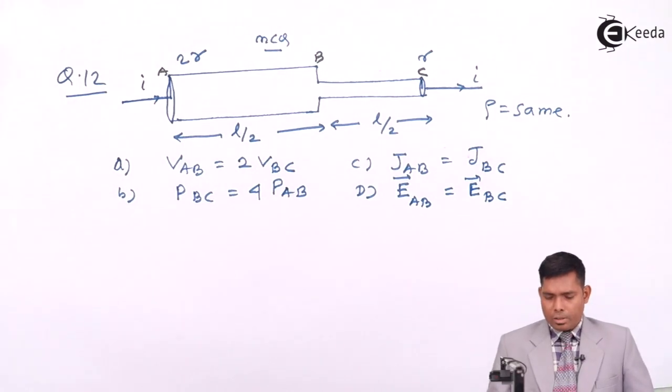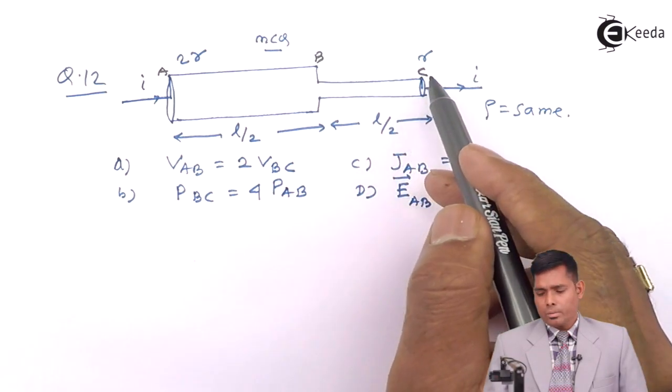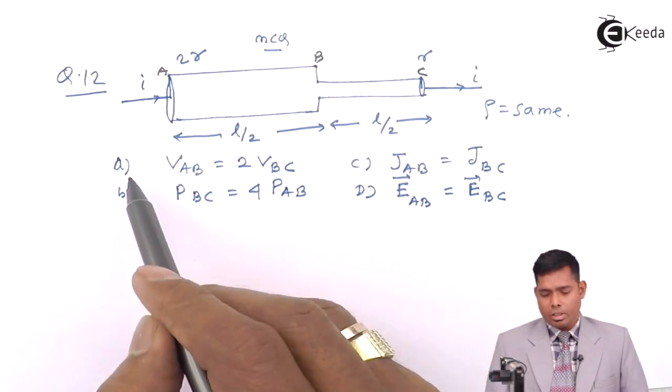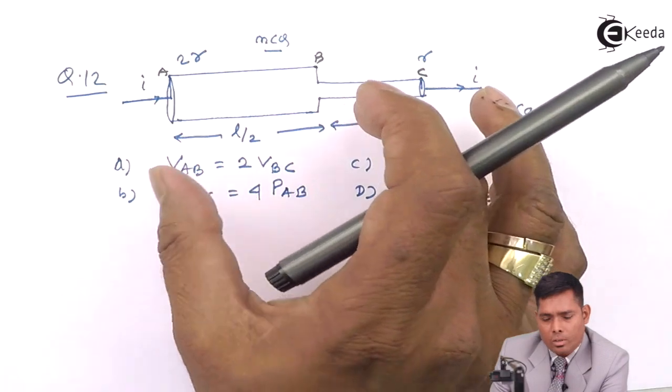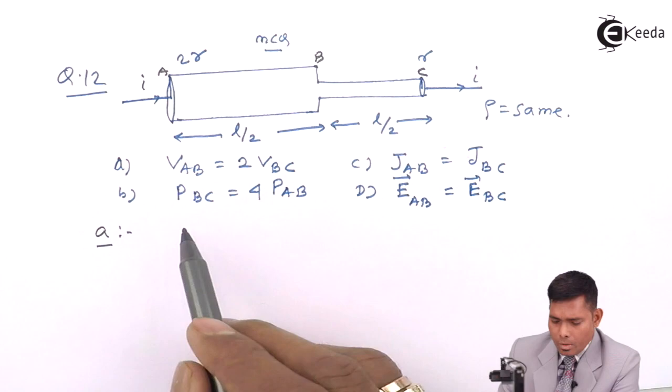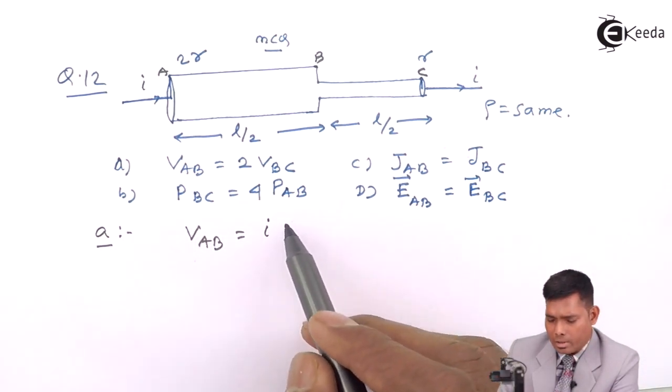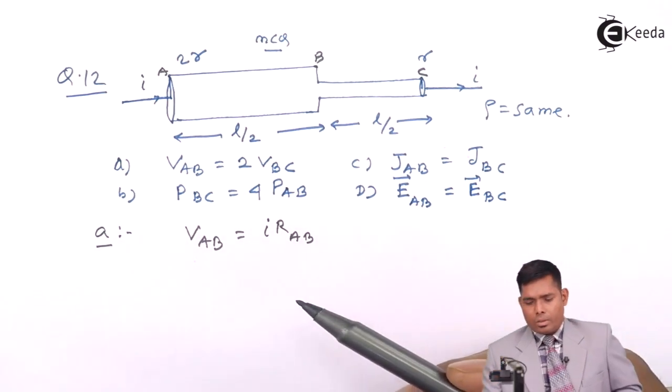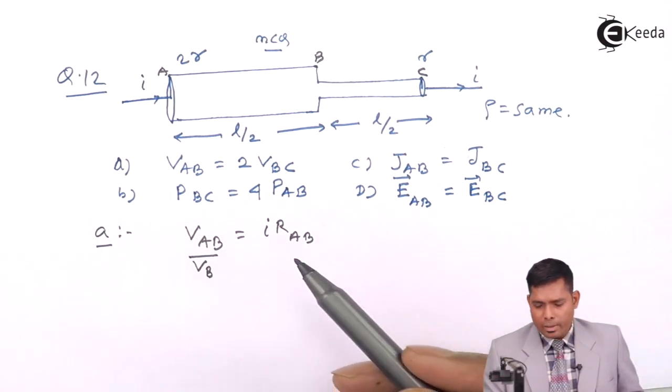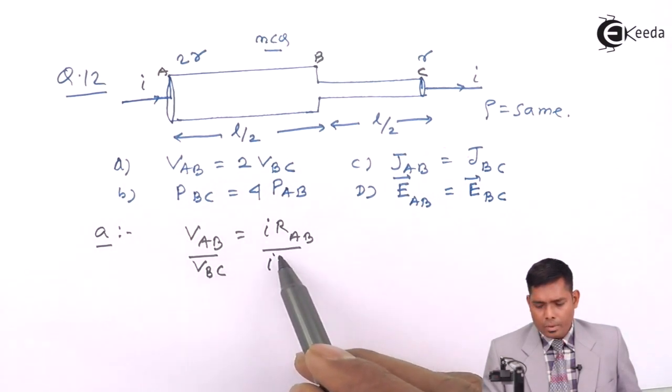Let us take first option. The potential difference between the two ends of conductor AB and the potential difference between the two ends of conductor BC - this voltage across this is double this, we have to check. How to find the potential difference? According to Ohm's law, the potential difference across the two ends equals current times the resistance RAB. Similarly, the relation is VBC equals I·RBC.